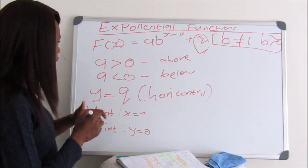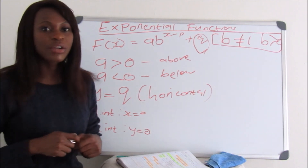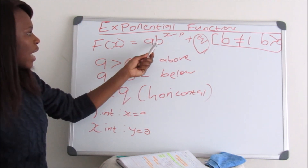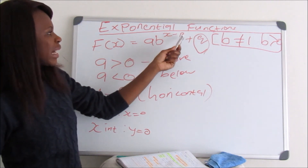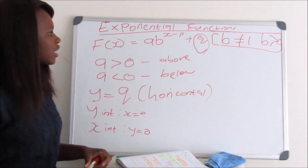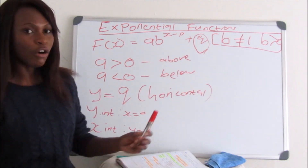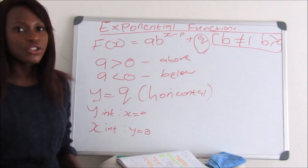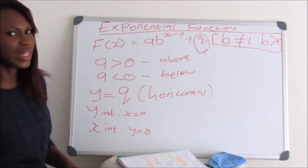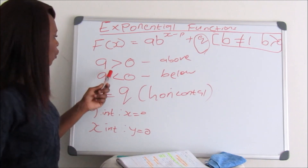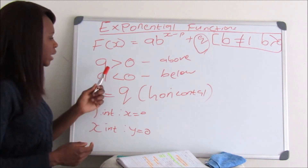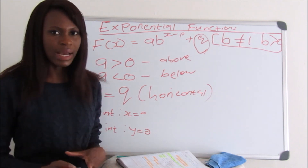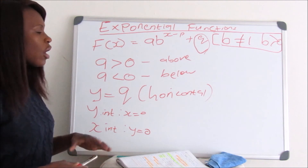Let's do a quick recap. The exponential graph has a standard equation of AB to the exponent of X minus P plus Q. The conditions are: B should never be equal to 1, and B should always be greater than 0. A determines which side of the asymptote the graph will lie at — if A is greater than 0, the graph lies above the asymptote.